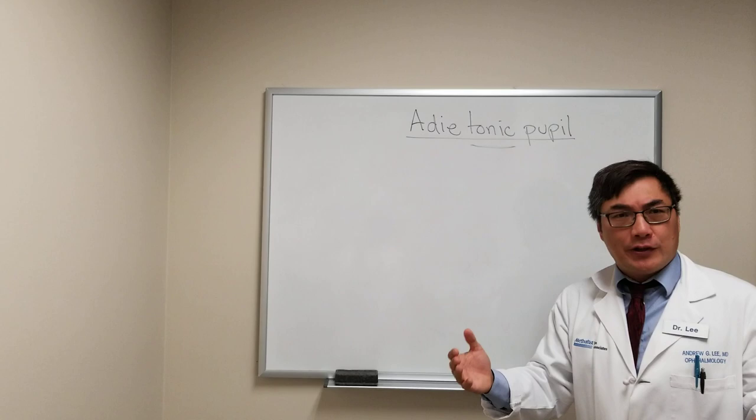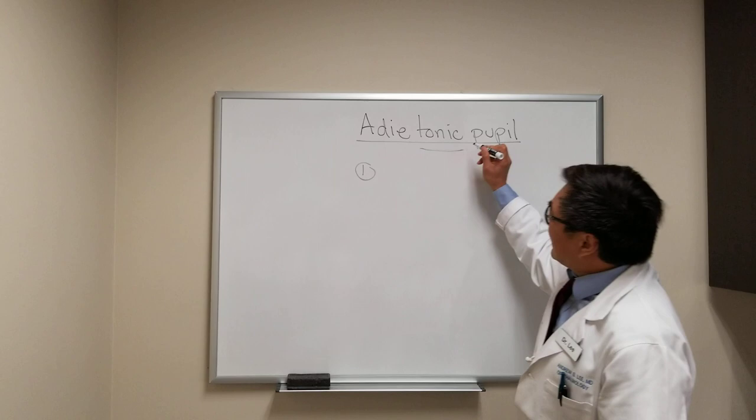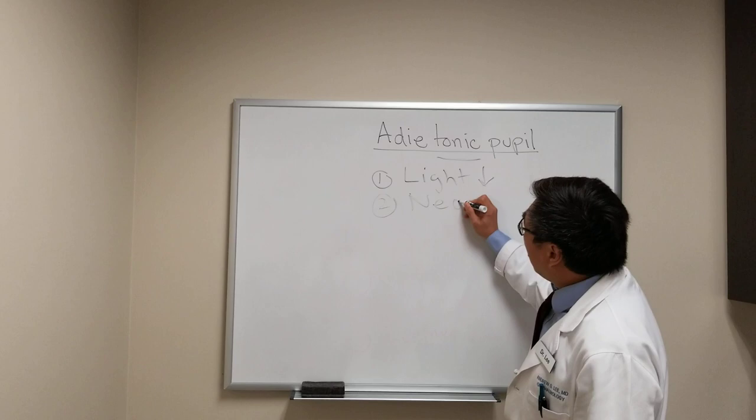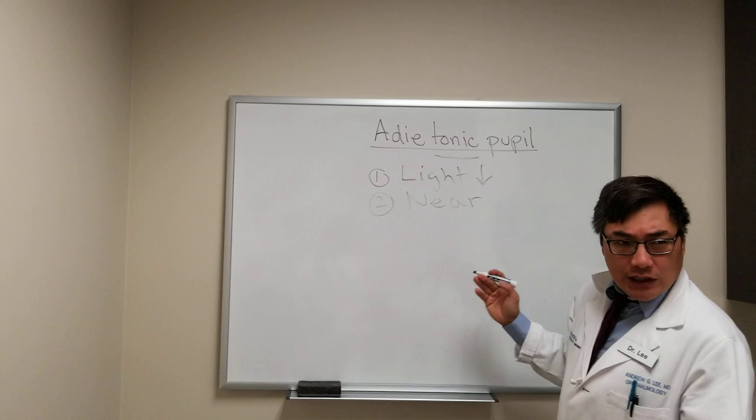In the Adie's tonic pupil, what we're looking for is increased tone on the near response. What we have is a light reaction that is either poor or absent, but a preserved near reaction. That finding is called light-near dissociation. When we see a light-near dissociation of the pupils, we'd like to know: is it unilateral or bilateral?